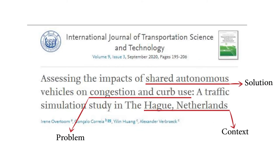Let's look at another research paper published in the International Journal of Transportation Science and Technology. The title says: 'Assessing the impact of shared autonomous vehicles on congestion and curb use — a traffic simulation study in the Hague, Netherlands.' In this title, traffic congestion is the problem. The context of application is the Netherlands. And the solution is the shared autonomous vehicle.